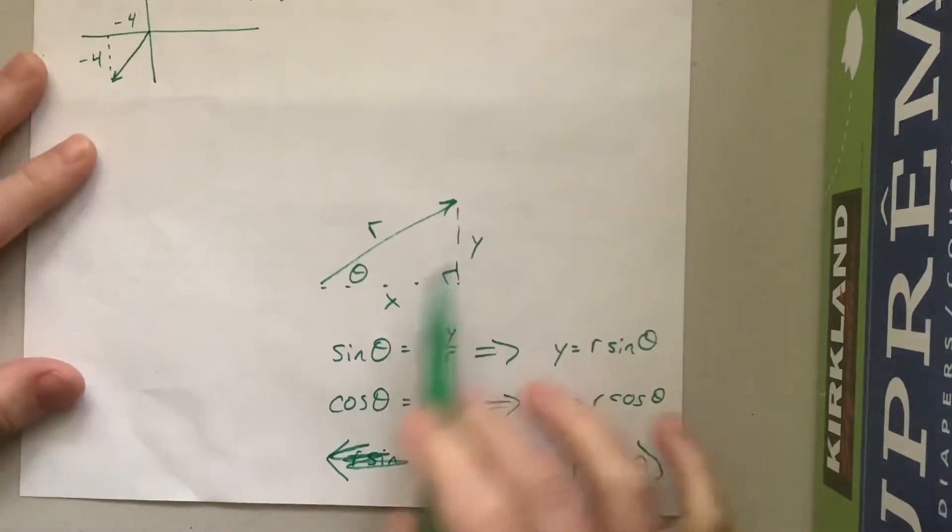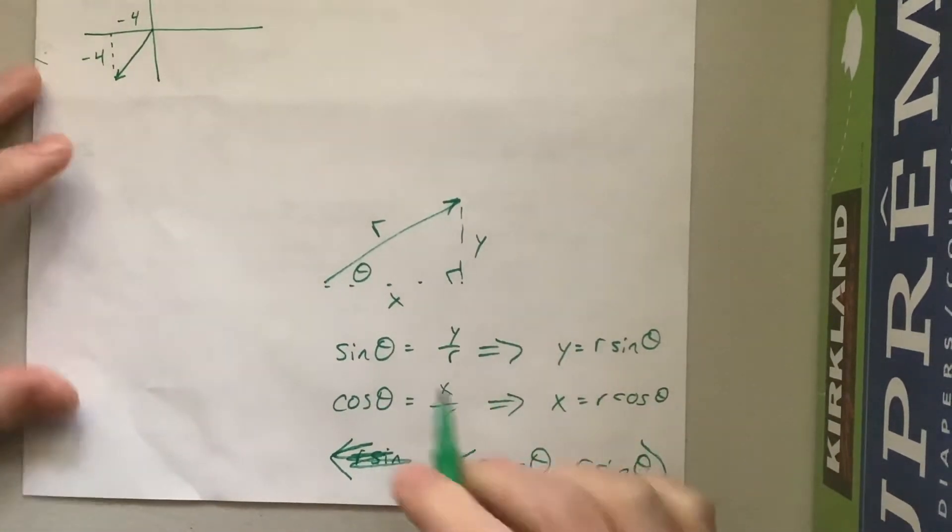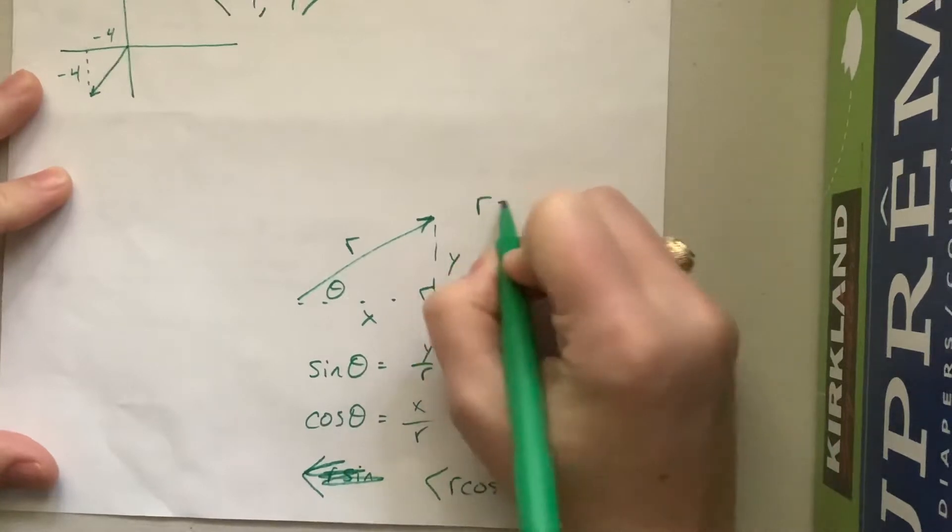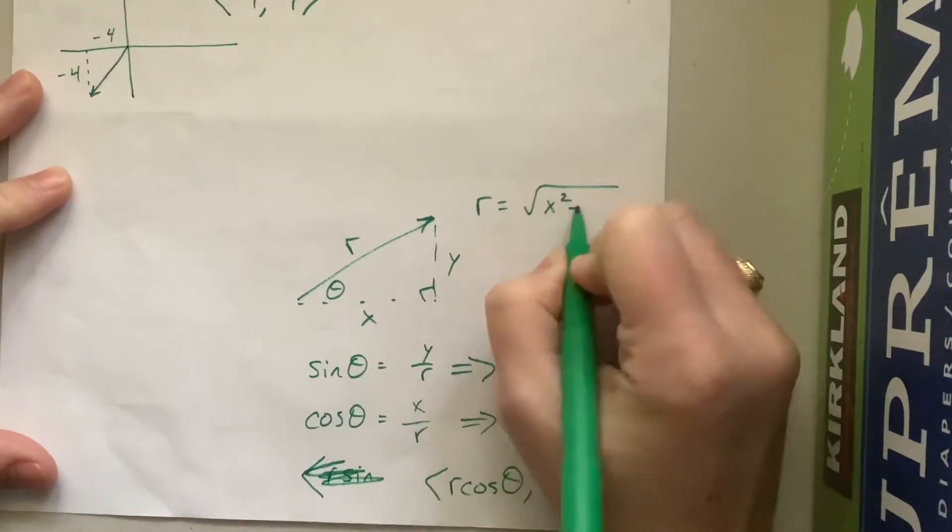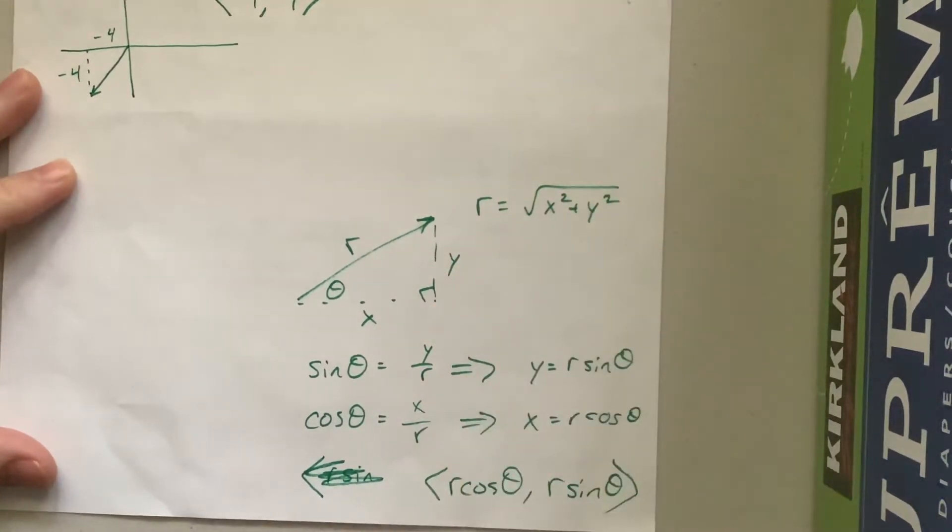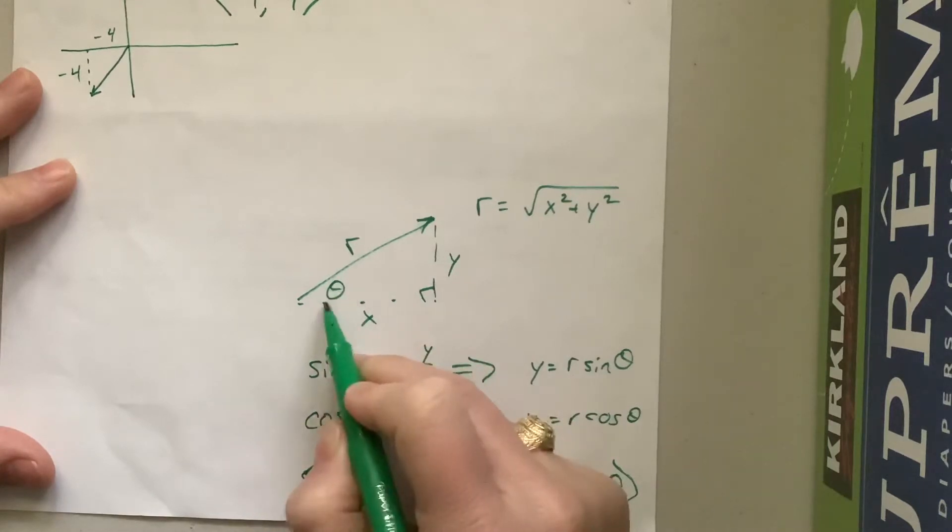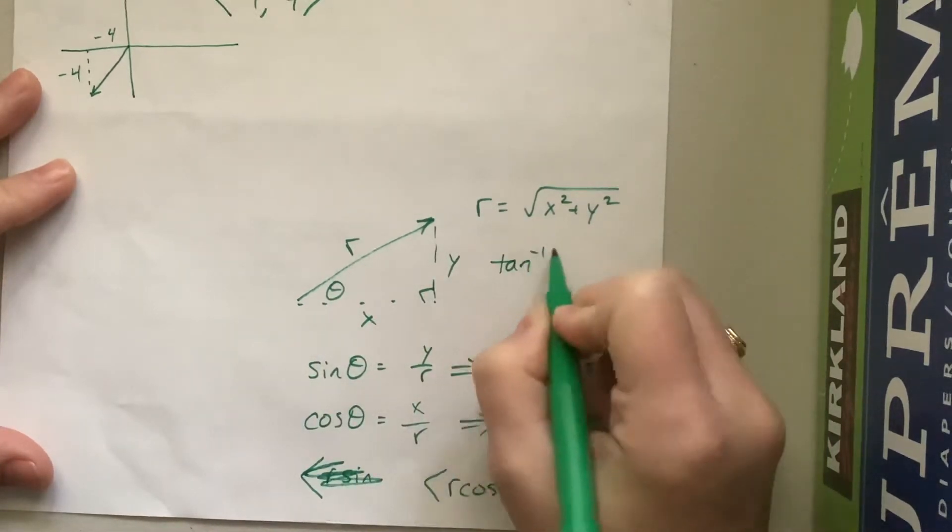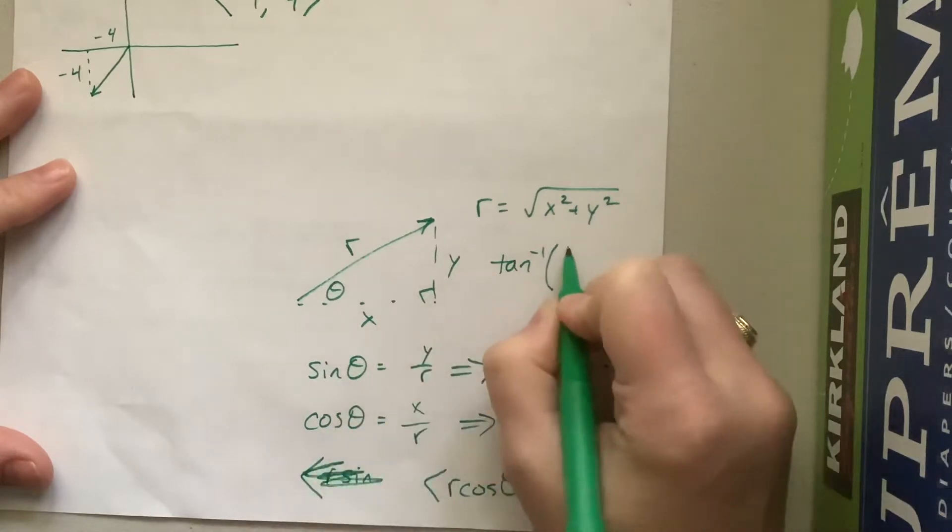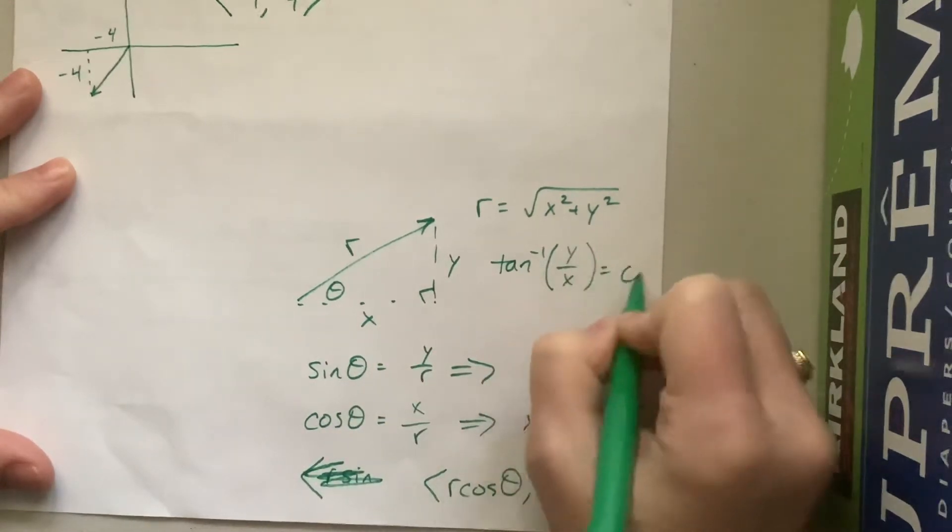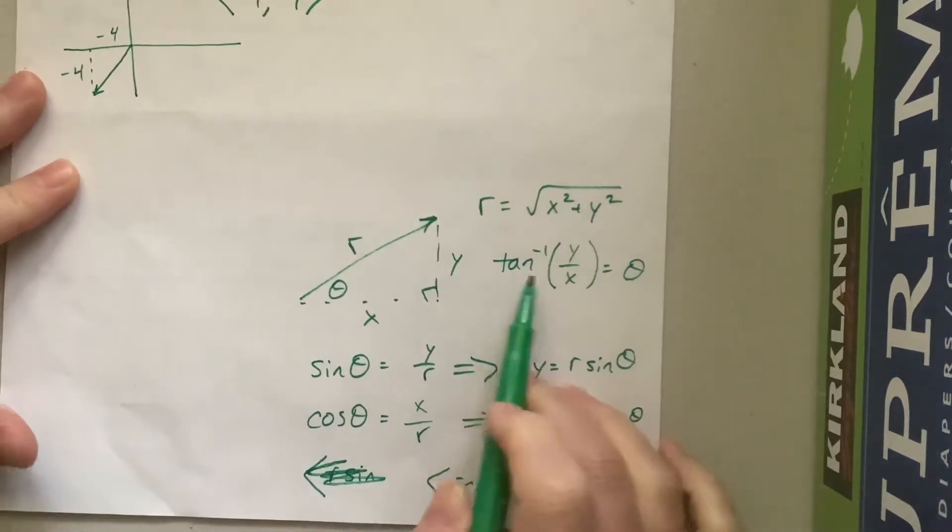Okay, so now let's say you know the x and y, which is what I really intended to talk about. To find r, r is equal to the square root of x squared plus y squared, because that's Pythagorean theorem. And then to find theta, it's tangent. So the inverse tangent of y over x is equal to theta.